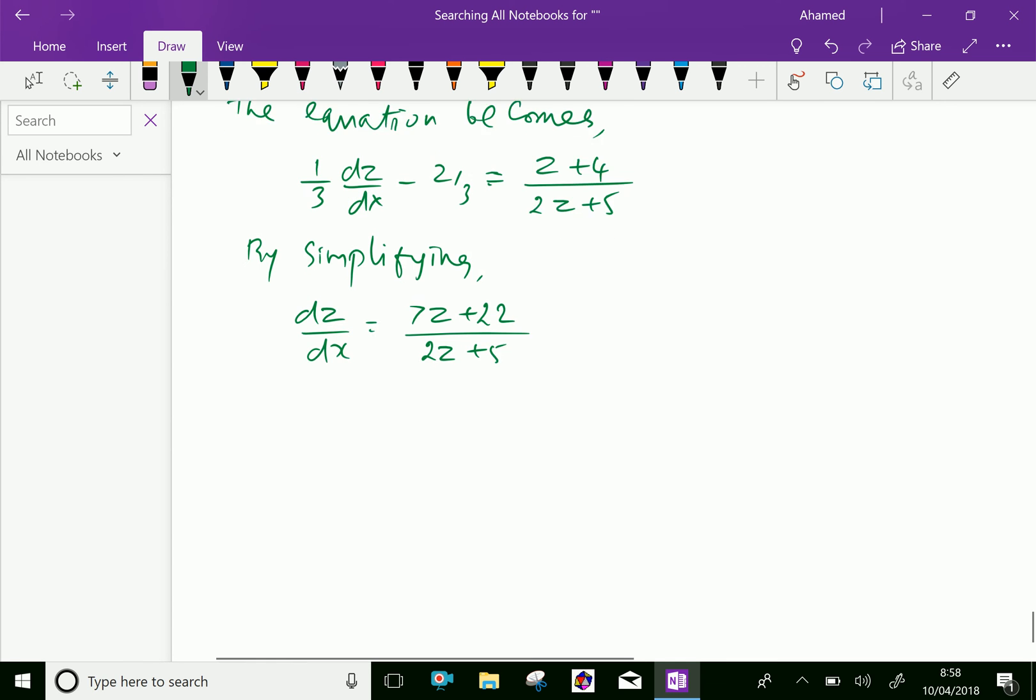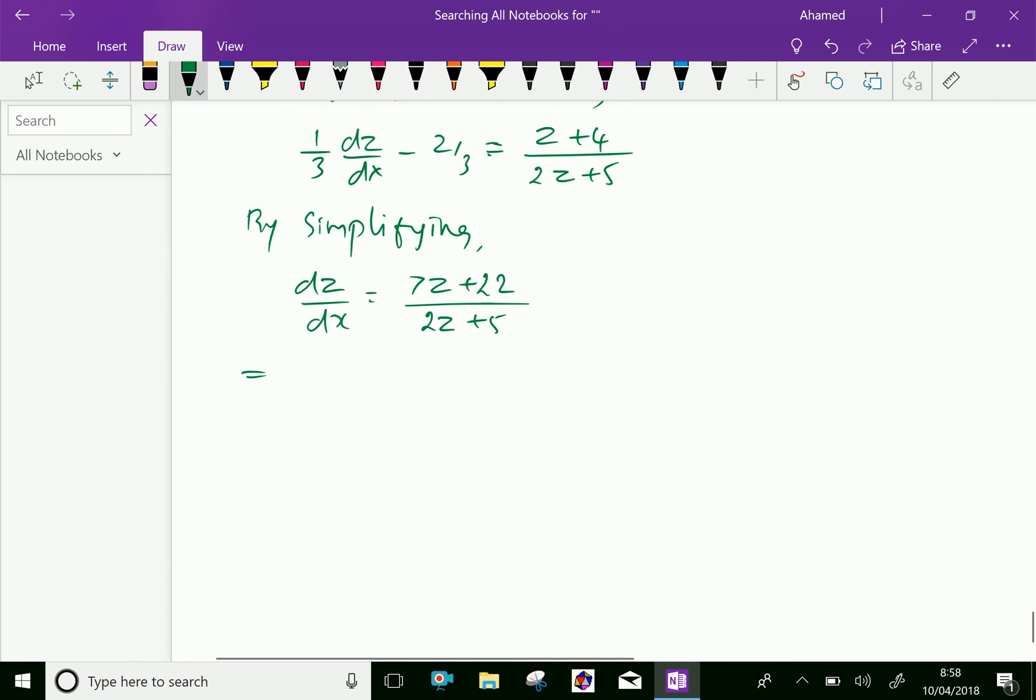Now, by rearranging, we have (2z + 5) over (7z + 22) dz equals dx. Both integrating.